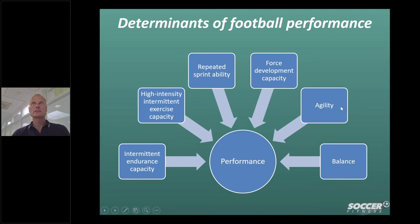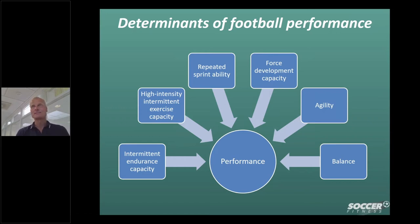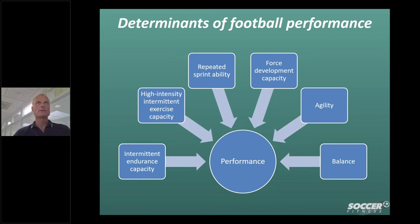Agility is another issue related to performance in football. Players who have agility also perform very well. Messi is probably one with the highest potential in terms of agility. Balance is also an issue — how well can you keep your body in the right position in a given situation in the game. So there are a number of components we need to concentrate on in determining their level and having an idea about how we are going to train each individual player.